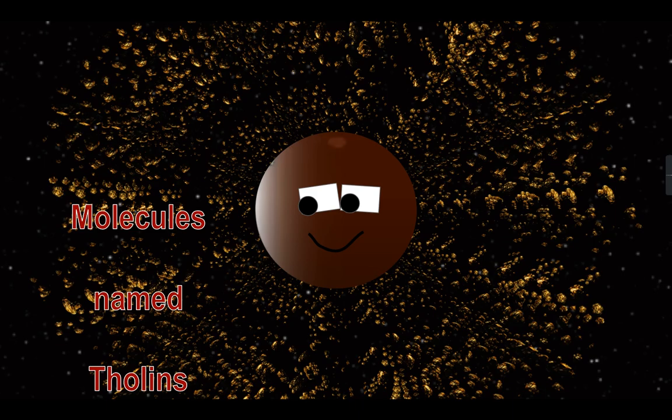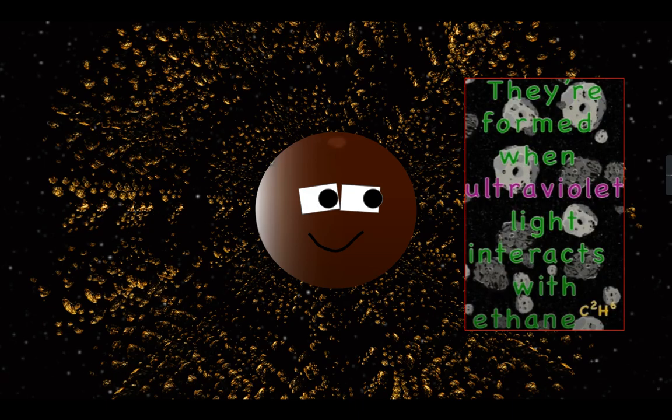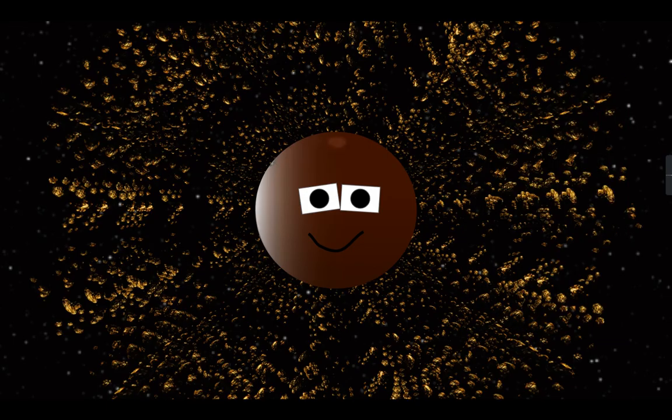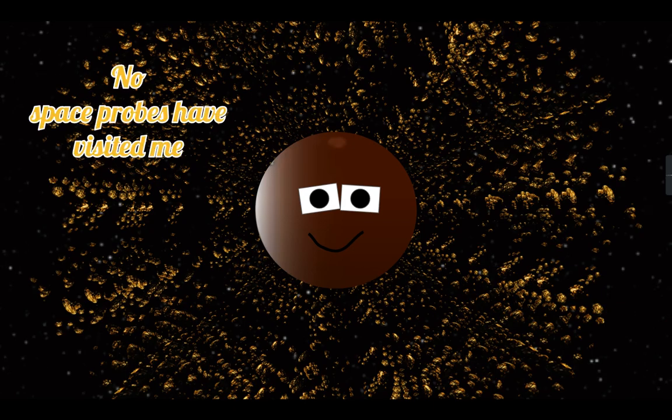Molecules named tholins are thought to exist on me. They're formed when ultraviolet light interacts with ethane you see. These molecules make me the reddish brown color I be, no space probes have visited me.